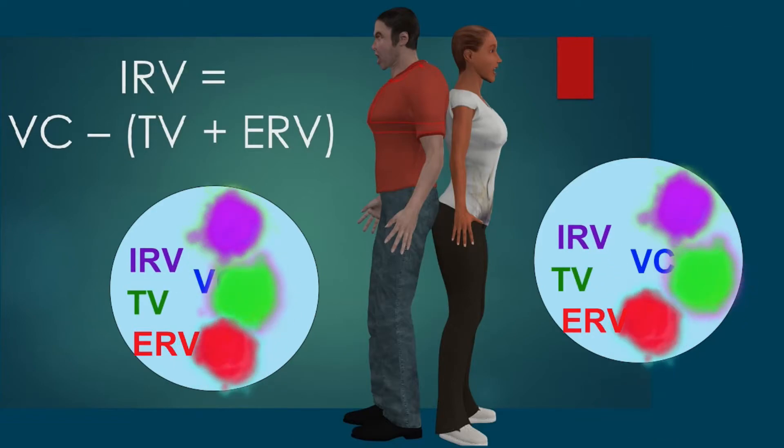If the vital capacity, the VC, is the sum of these three numbers, if you can measure two of them, the TV and the ERV, that's a normal exhale and a forceful exhale, and you can measure the vital capacity, then you rearrange the equation.